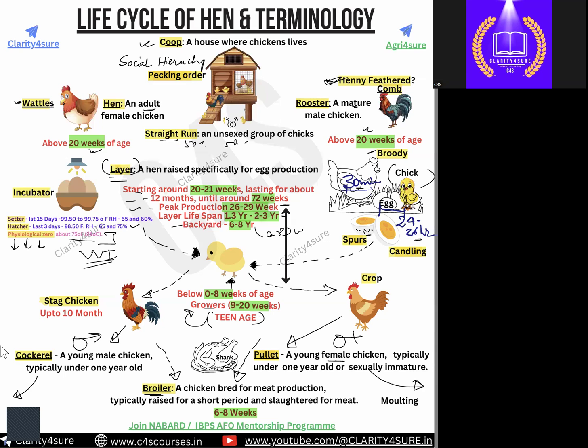For meat purposes, the meat should be tender, so the age is very less — six to eight weeks of age. Both males and females can be used as broilers at six to eight weeks of age. The pullet will eventually become a mother, lay eggs, and the cycle continues.